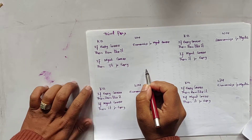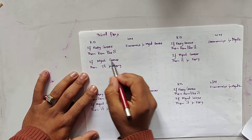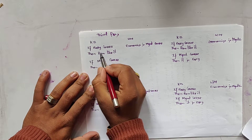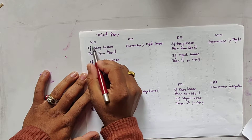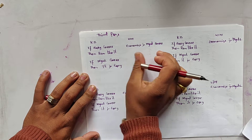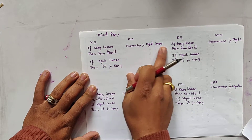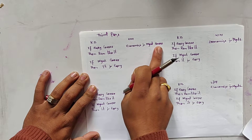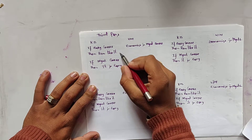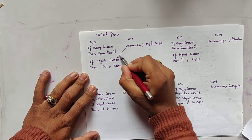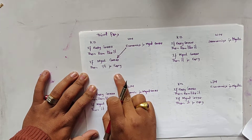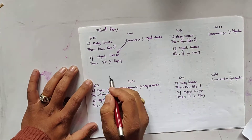In the third pass, the given fact is checked in the if-part of the rules in the knowledge base. The fact is 'economics is a management course.' Checking against the if-part 'easy course' - it does not match. Checking 'management course' - it matches, so this is shown with an arrowhead. This is the third pass.